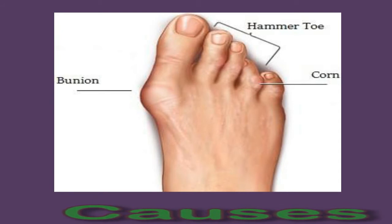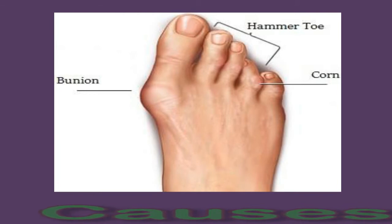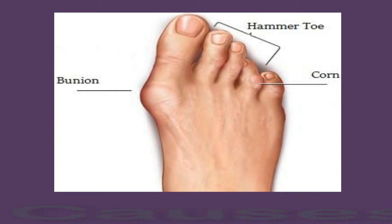Certain diseases — people suffering from conditions like arthritis or diabetes are more likely to develop foot problems including hammer toe. Genetics — sometimes hammer toe is hereditary and may run in families. Due to footwear styles, women are more likely than men to develop hammer toe, and the risk also rises with age.